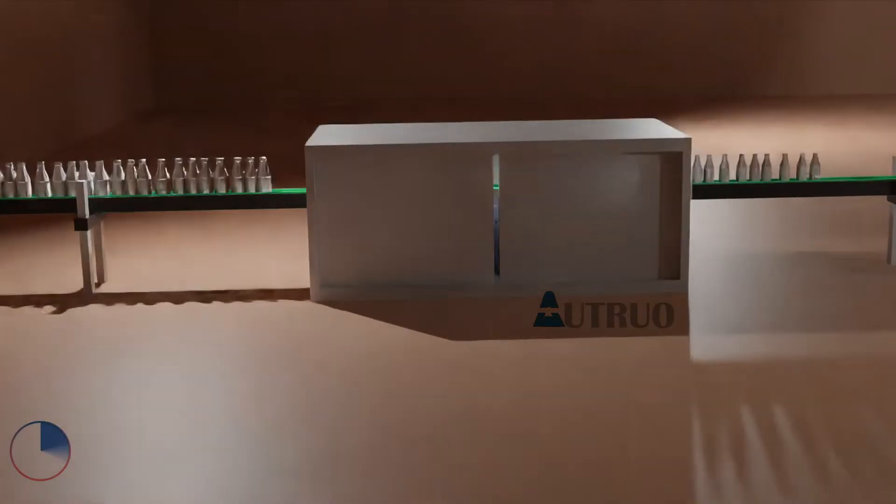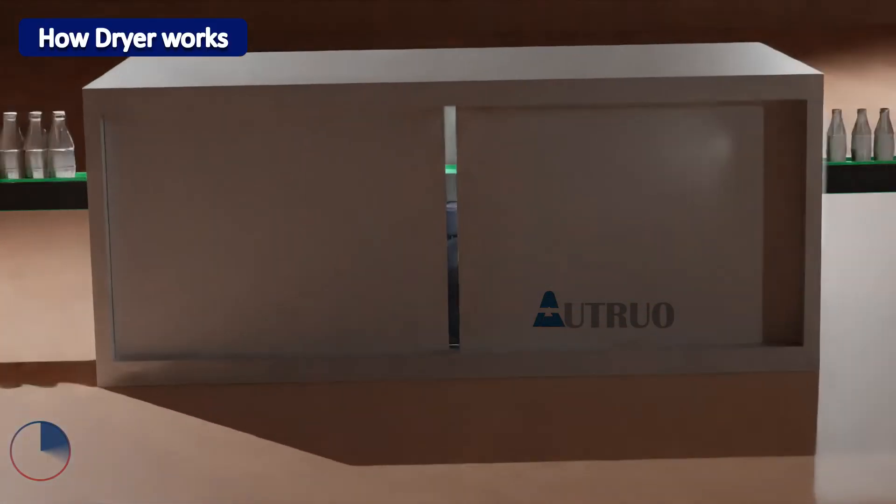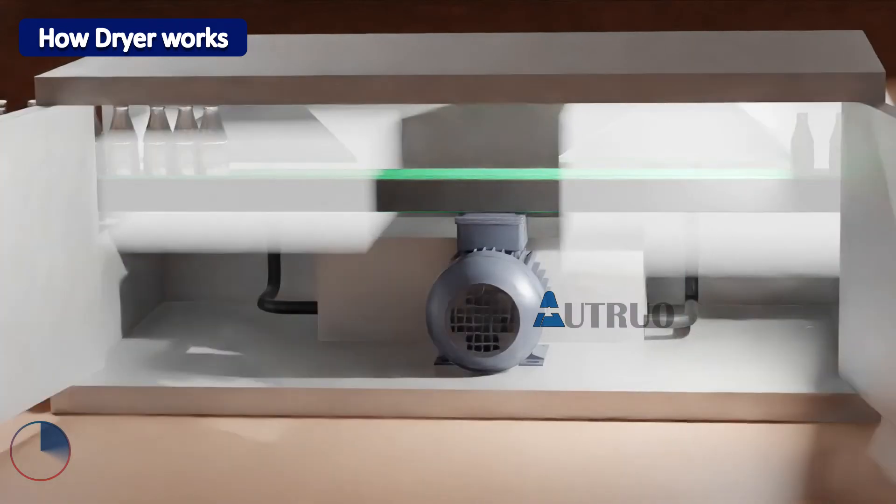At the infeed of the labeler, there lies a machine which is known as a dryer. The dryer is used to remove moisture from bottles. Because it will be very difficult to paste labels on wet bottles, hence it's needed.